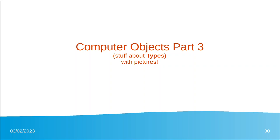Welcome to Part 3 of Computer Objects, Object Oriented Programming Introduction. This one is going to be about types of variables and we're even going to have pictures.